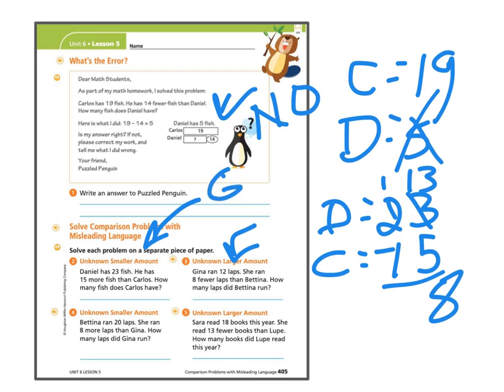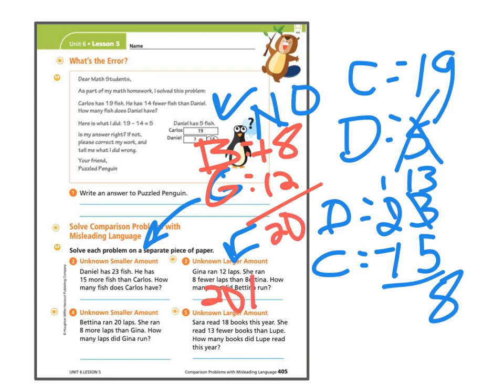Gina ran 12 laps. G, I'll make this one red. So Gina 12, and I like to take notes on mine. She ran 8 fewer laps than Bettina. So I usually will write it where the bigger number is going to be on top. What we know is that if Gina ran 12 laps, she ran less than Bettina, which then we would have to add those 8 laps, which you could do that any way you wanted, to the 12. And there would be 20 laps.